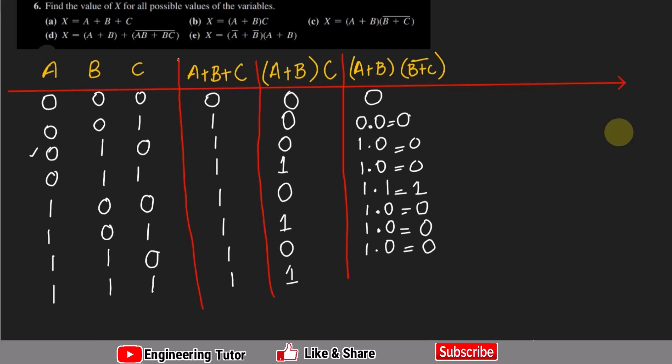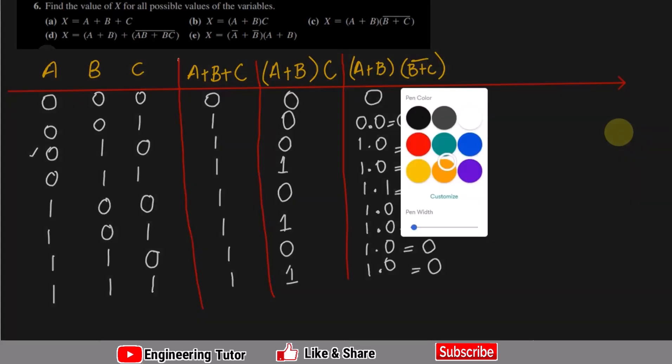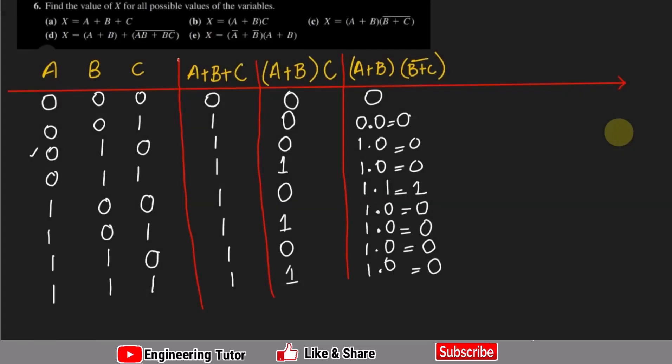For a=1, b=1, c=1: a+b is 1, b+c is 1, complement is 0, result is 0. That is the answer for question C.